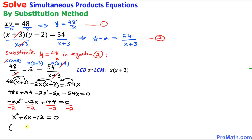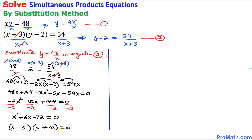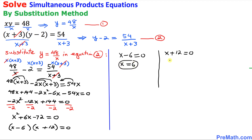The possible factors of 72 are 6 and 12, so we can write x minus 6 times x plus 12 equals 0. Setting each factor equal to zero: x minus 6 equals 0 gives x equals positive 6, and x plus 12 equals 0 gives x equals negative 12.